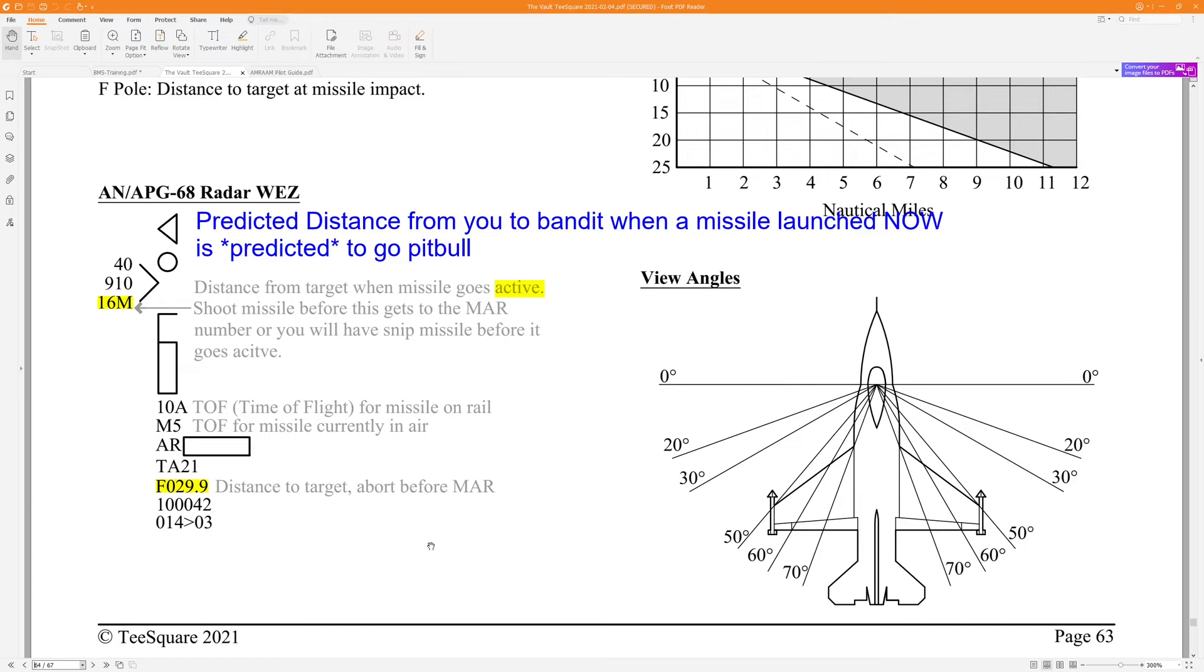So you fire a missile now, there will be 16 miles between you if nothing else changes when the missile's radar takes over and you're free to turn around and go cold. Now, we know we're probably going to crank, so we're going to fire, and we're going to crank off to the side, which is actually going to increase this a little bit. So in the engagement here, I'm going to try and wait until 12 miles here at the predicted M pole before I fire for the MiG-23s and 15 for the MiG-29As. And then I'm going to crank off to the side, and I will try my best to watch this distance here and make sure I don't get closer to the bandit than is safe.